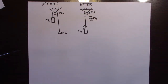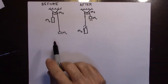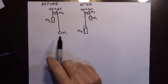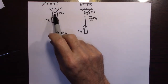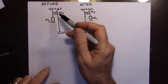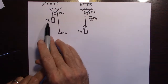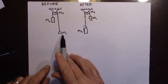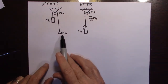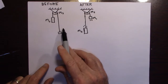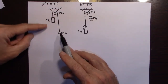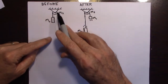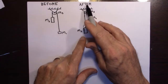Welcome. I'm going to do an Atwood's machine problem where you have two masses connected by a string draped over a pulley. The pulley has mass m3, the heavier mass is m2, the lighter mass is m1. We're going to release this — the heavier mass will go down as the other mass goes up. Here's the before and after.